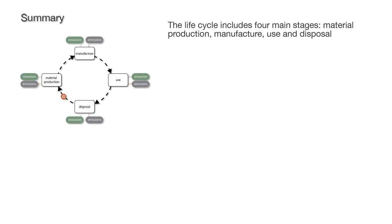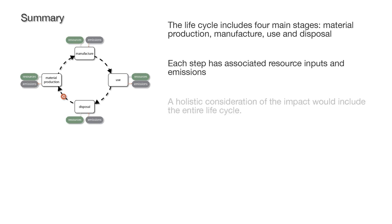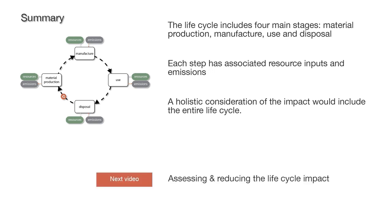The life cycle includes four main stages: material production, manufacture, use, and disposal. Each step has associated resource inputs and emissions. A holistic consideration of the impact would include the entire life cycle. In the next video, we look at assessing and reducing the life cycle impact.